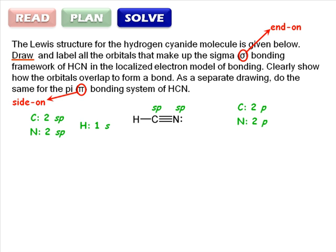Start with the sigma bonding framework and draw a line to represent the plane of the molecule. Nitrogen is here, carbon here, and hydrogen here.